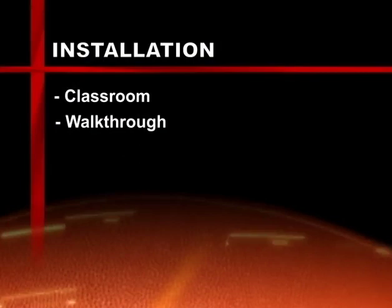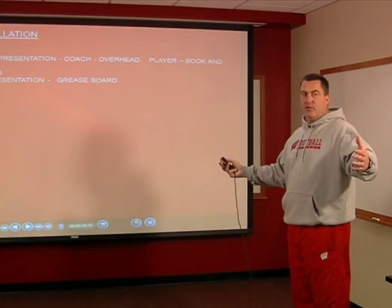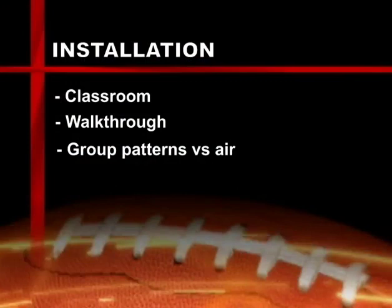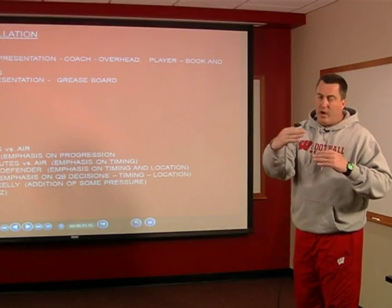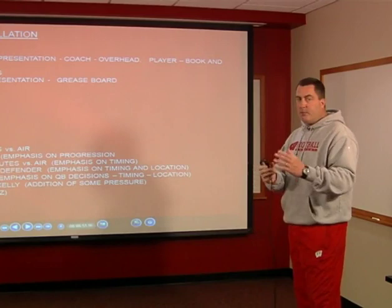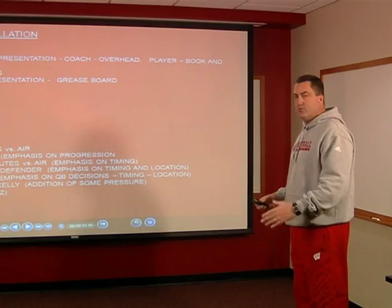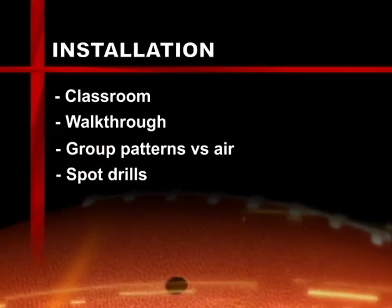Once we leave the classroom, we go to a walk-through setting. Before we run, we're going to walk. Now a guy gets a feel for where his split is in the passing game, how it's going to look, and where everyone ends up. That gives them a visual, then you go to the practice field. The first thing we do is what we call group patterns versus errors — we line up and see how everyone fits into the play. If you've got a crossing pattern, see if the Y receiver knows he's over the top of the X receiver. Understanding the split — if you're going to be at the top of the numbers for your single receiver, he sees it and knows where he's at.